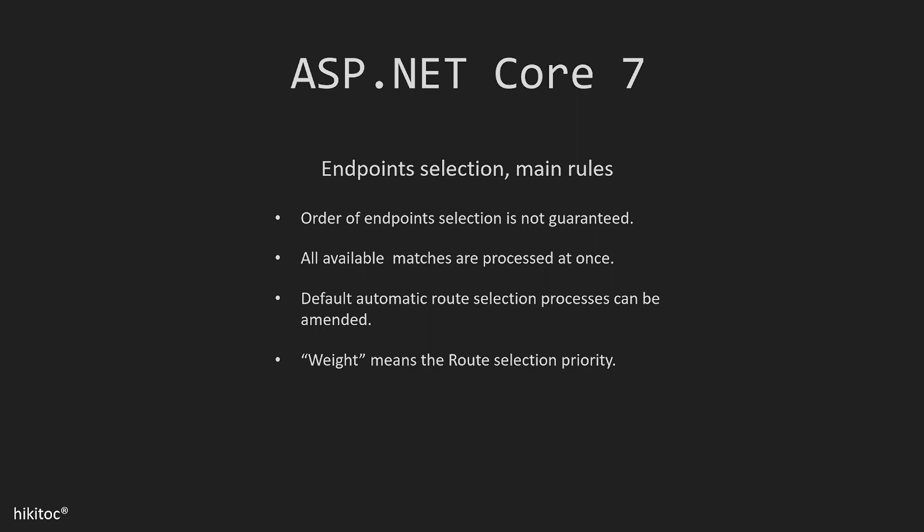Then, all available matches are handled together. Imagine having 10 endpoints — all of them are checked simultaneously. After that, .NET Core 7 usually takes care of route selections on its own, but developers can adjust the order. We will discuss how to adjust selection priorities in upcoming lessons.